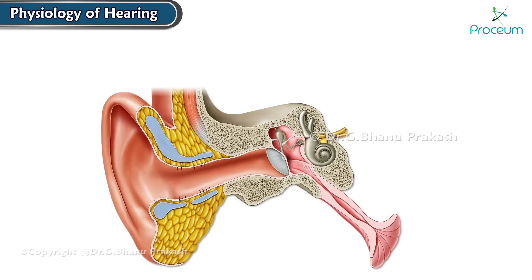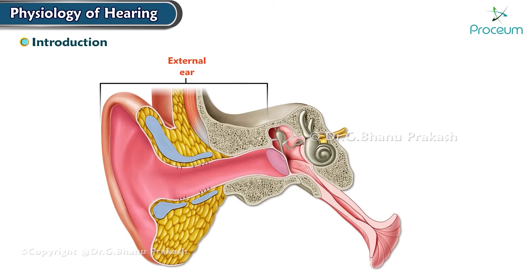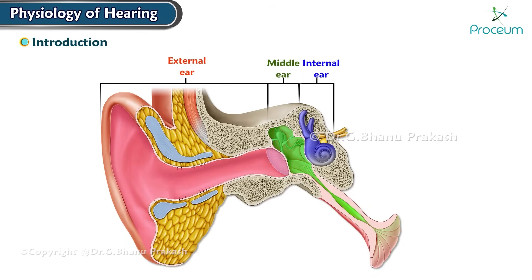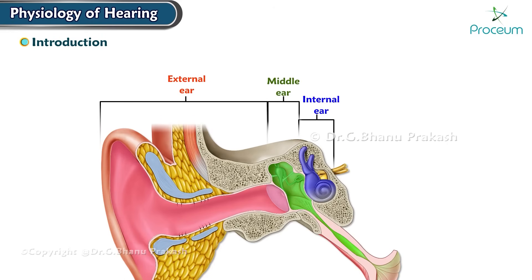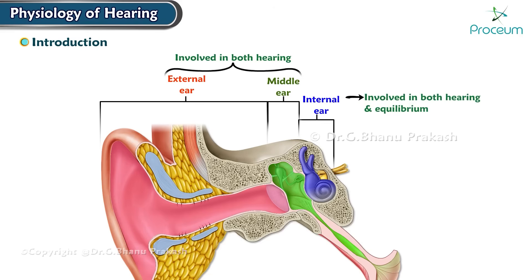Physiology of Hearing. The ear is divided into three functionally distinct regions: the external outer ear, middle ear, and internal inner ear. The external and middle ear structures are involved in hearing, and the structures of the internal ear are involved in both hearing and equilibrium.